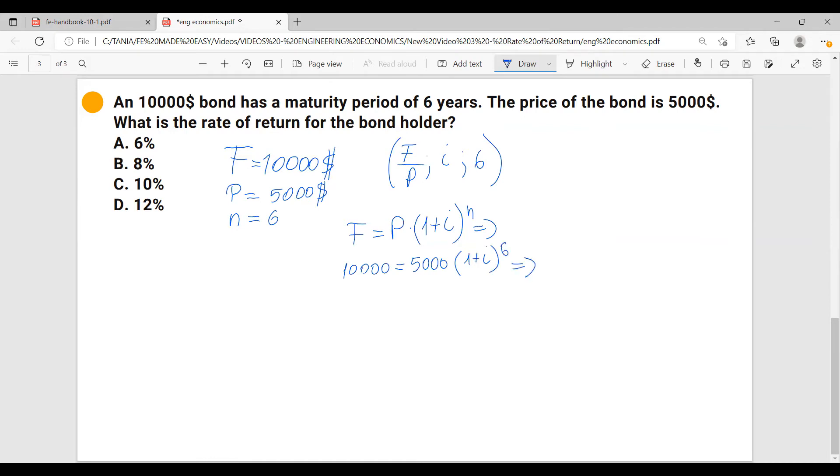From here, we get one plus i power six equals to 10,000 over 5,000, which is two. So this problem, you can easily solve it on your calculator. But if you don't have a calculator...